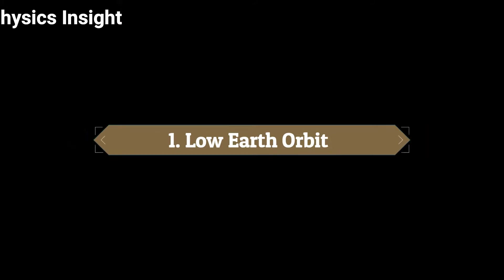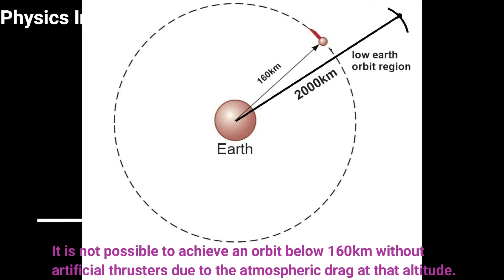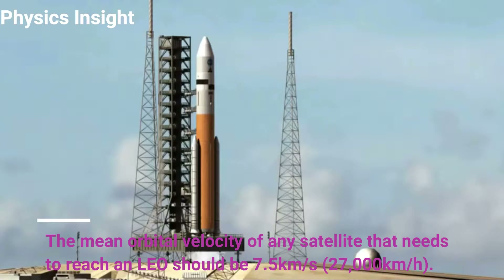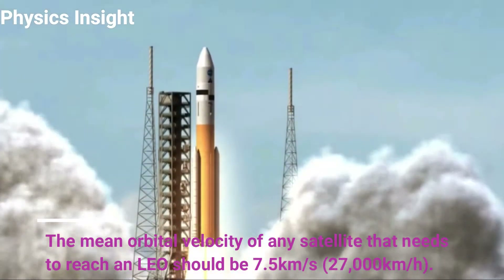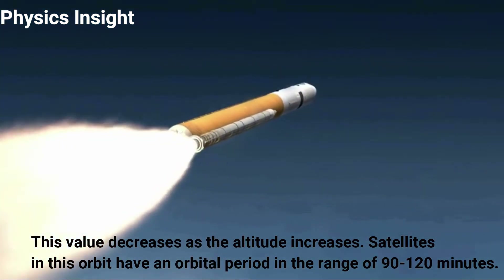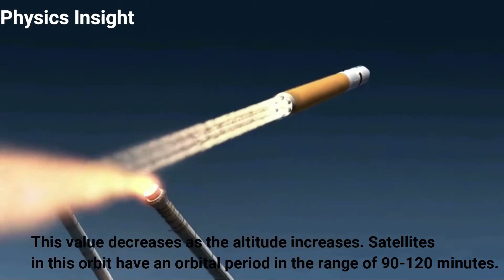Number one: Low Earth Orbit. This orbit extends from 160 kilometers above Earth and ends at 2,000 kilometers. It is not possible to achieve an orbit below 160 kilometers without artificial thrusters due to atmospheric drag at that altitude. The mean orbital velocity for a satellite in LEO should be 7.5 kilometers per second, or 27,000 kilometers per hour. This value decreases as altitude increases, and satellites in this orbit have an orbital period in the range of 90 to 120 minutes.